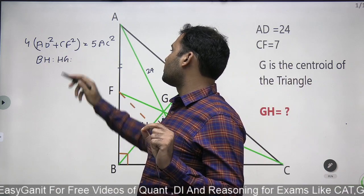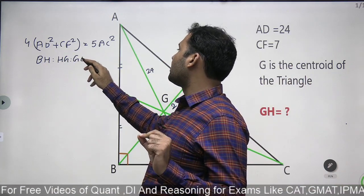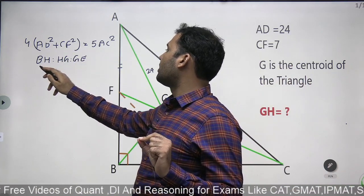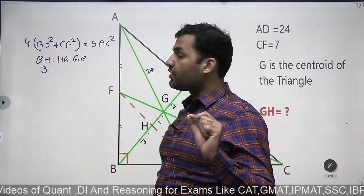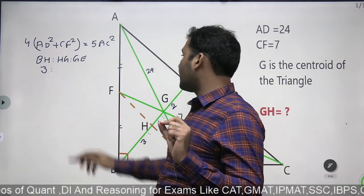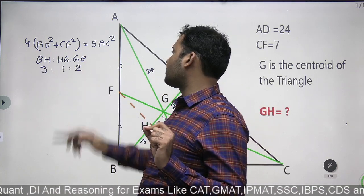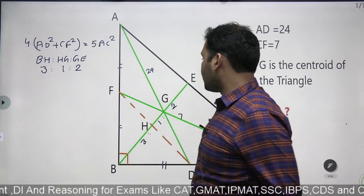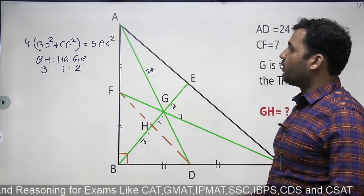This is what we are doing in this series of 50 golden rules. We will not just be doing questions, we will also be covering 50 theorems with proof. So the two rules: 4 times the sum of the squares of the medians on the perpendicular sides equals 5 times the square of the hypotenuse, and BH:HG:GE = 3:1:2.